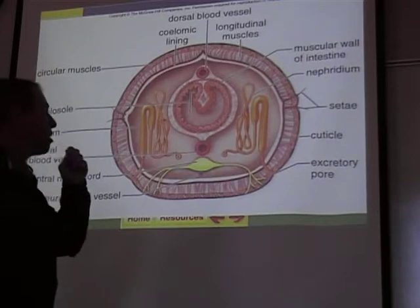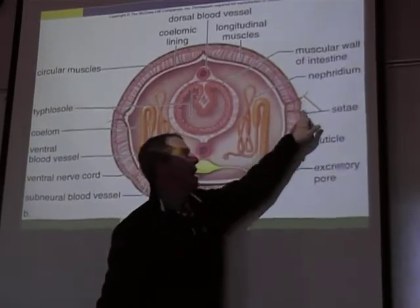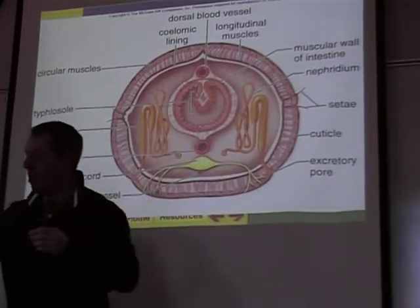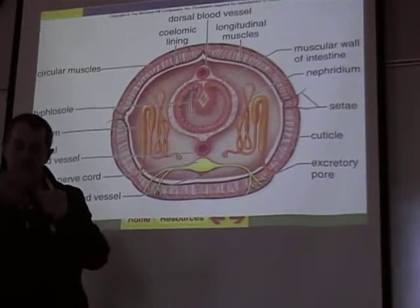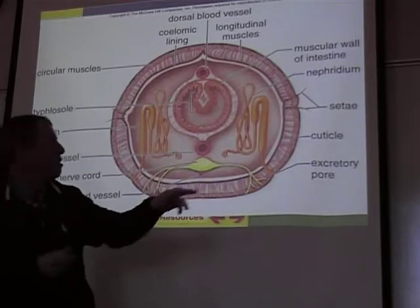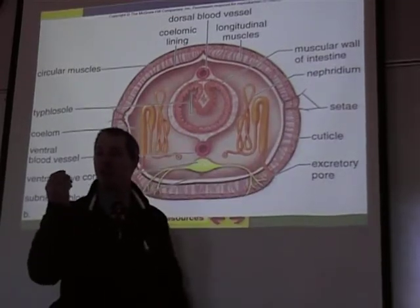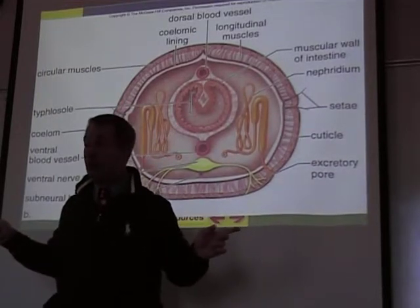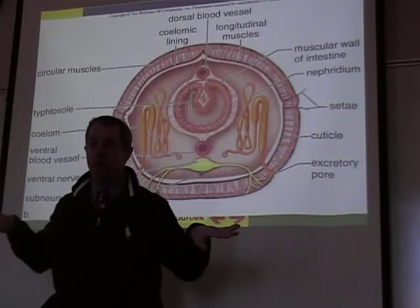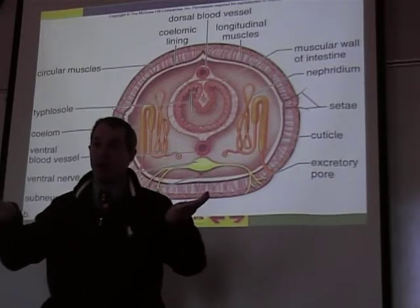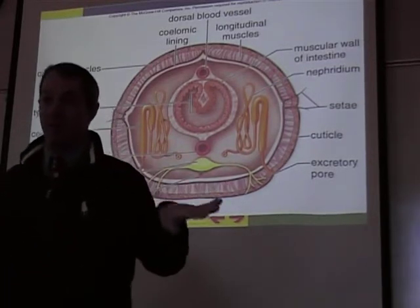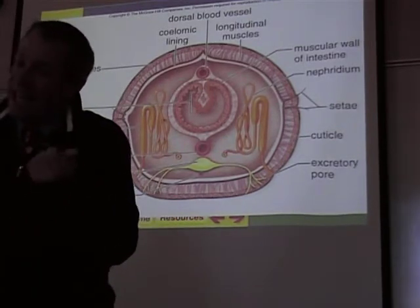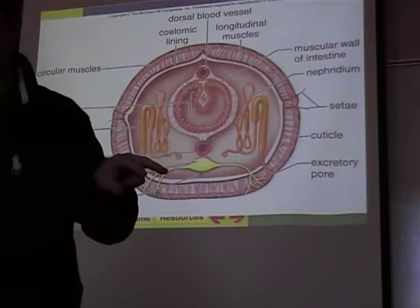The setae are little hairs — little bristles that stick out of the worm. You'll be able to feel them tomorrow during the dissection: run your fingers along the side of the worm and you can feel them. You can't really see them because they're almost microscopic, but you can feel them. They stick out of the body and anchor the worm in the dirt so the muscles can pull it through. The setae don't move, but the muscles of the worm move and need those setae to anchor themselves in the dirt.